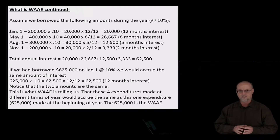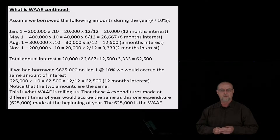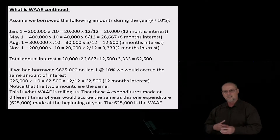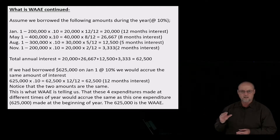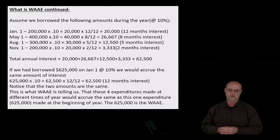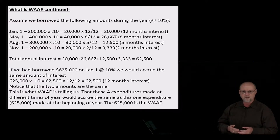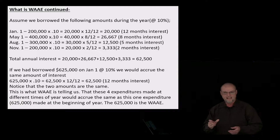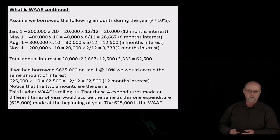If we had borrowed $625,000 on January 1st at 10%, one year's interest would be $62,500 — the same number. And that's exactly what weighted average expenditures is. It's saying all these different expenditures made at different times of year are equivalent to this one number spent on January 1st where we're calculating a full year's interest. So the weighted average expenditures is simply coming up with one number that, from a weighted standpoint, was made on January 1st, and we accrue a full year's interest on that number.